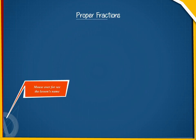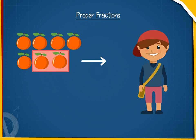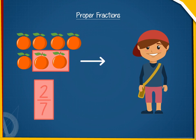There are 7 oranges, out of which Raman eats 2 oranges. This means 2 out of 7 oranges are eaten. We can write it as 2 by 7.